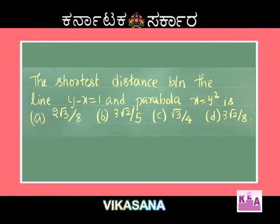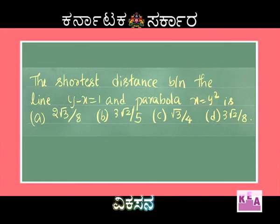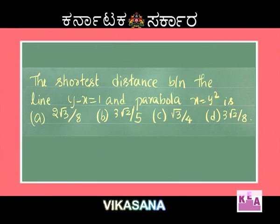The next question: the shortest distance between the line y − x = 1 and the parabola x = y². Options: 2√3/8, 3√2/5, √3/4, or 3√2/8.